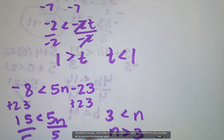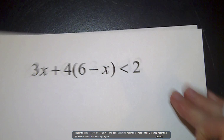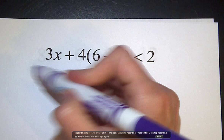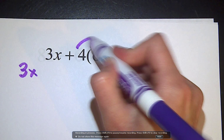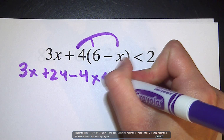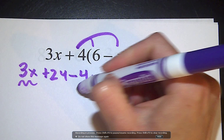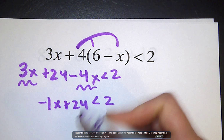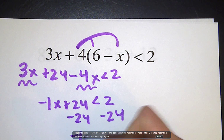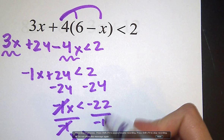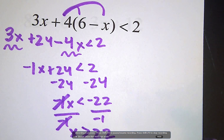Let's look at example 2 now. We have grouping symbols on just one side of the inequality, so I'll distribute. The 3x stays, and 4 times 6 is positive 24, 4 times negative x is negative 4x, less than 2. Adding like terms: 3x minus 4x is negative 1x, plus 24 is less than 2. Subtract 24 from both sides, getting negative 1x is less than negative 22. Divide by negative 1 — dividing by a negative, so flip the sign — giving x is greater than 22.